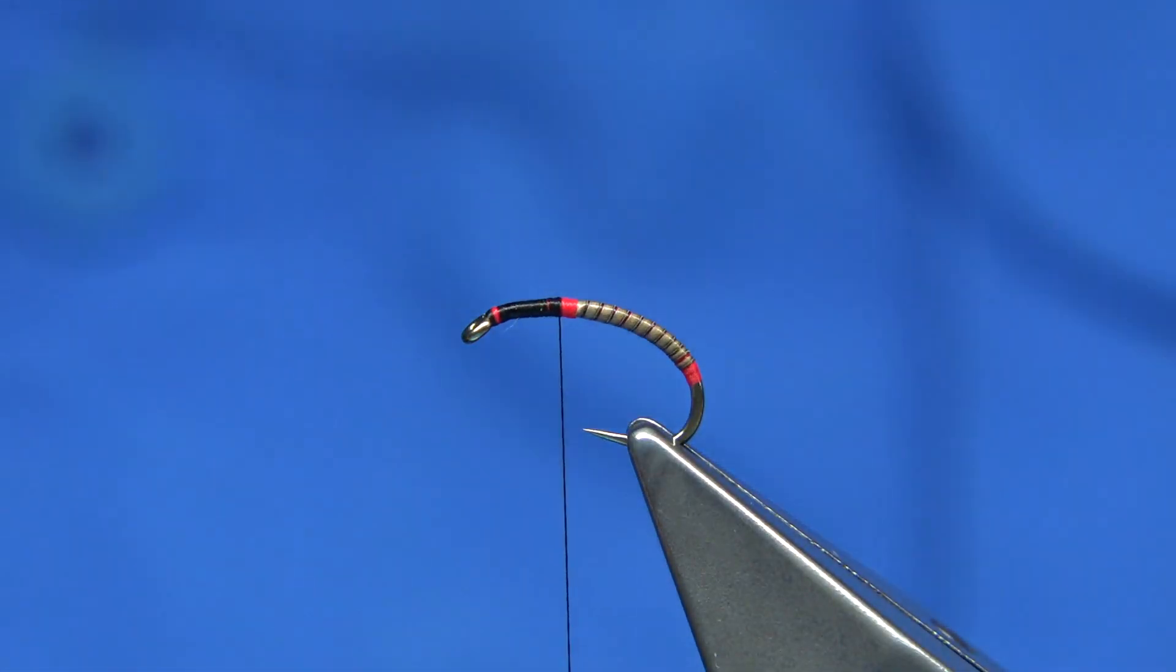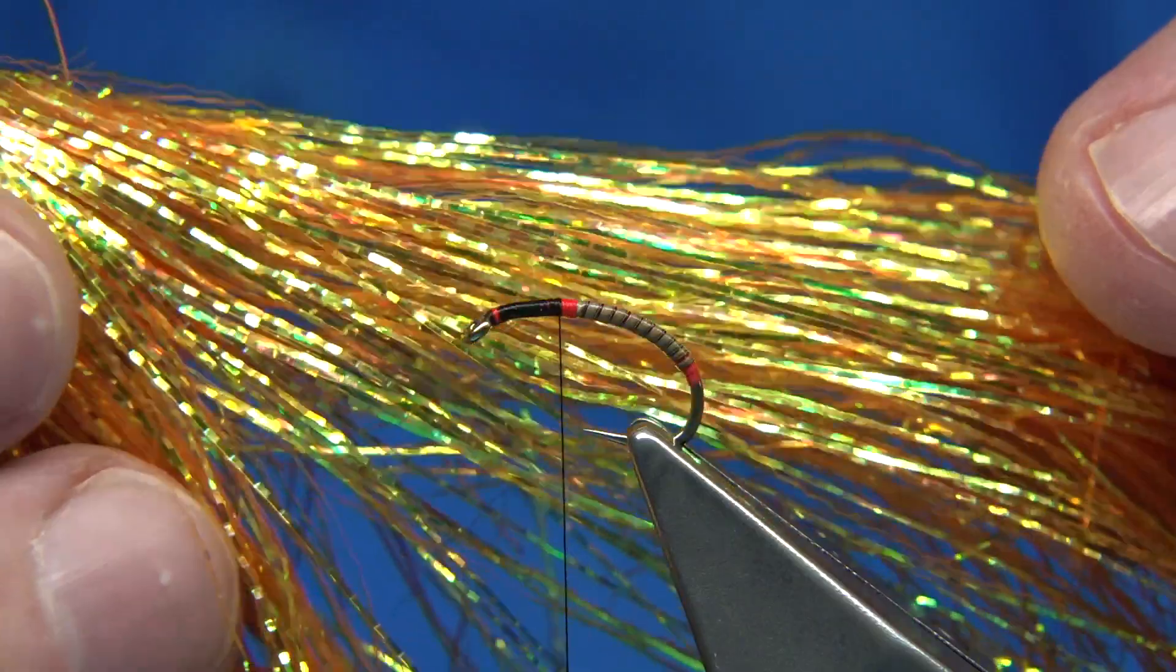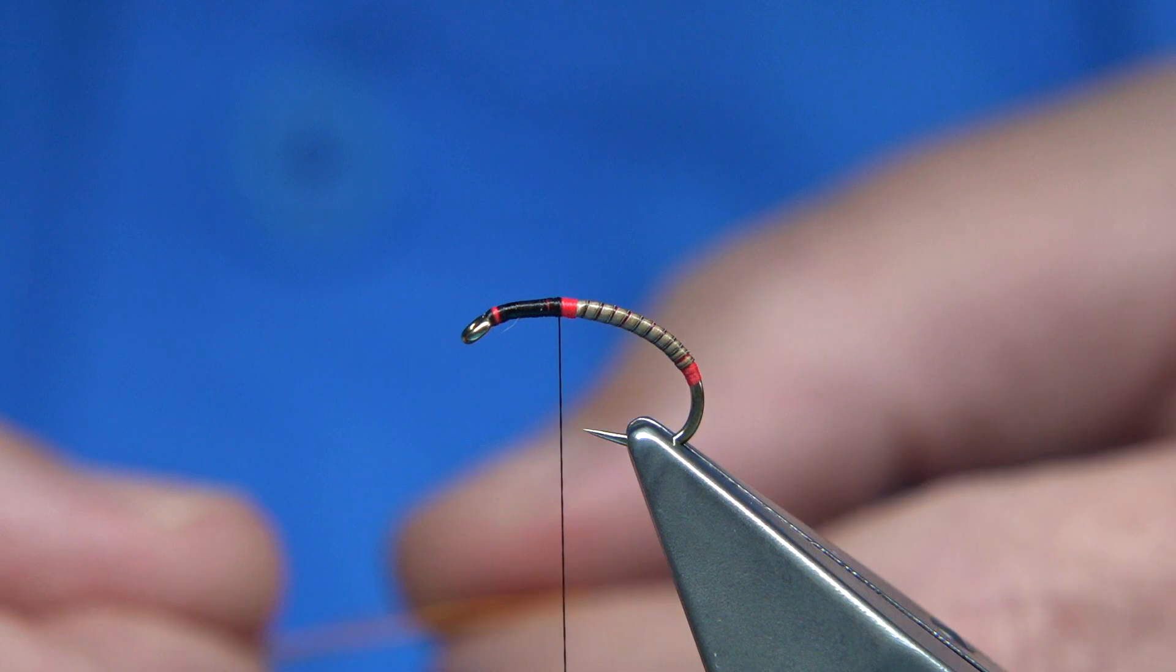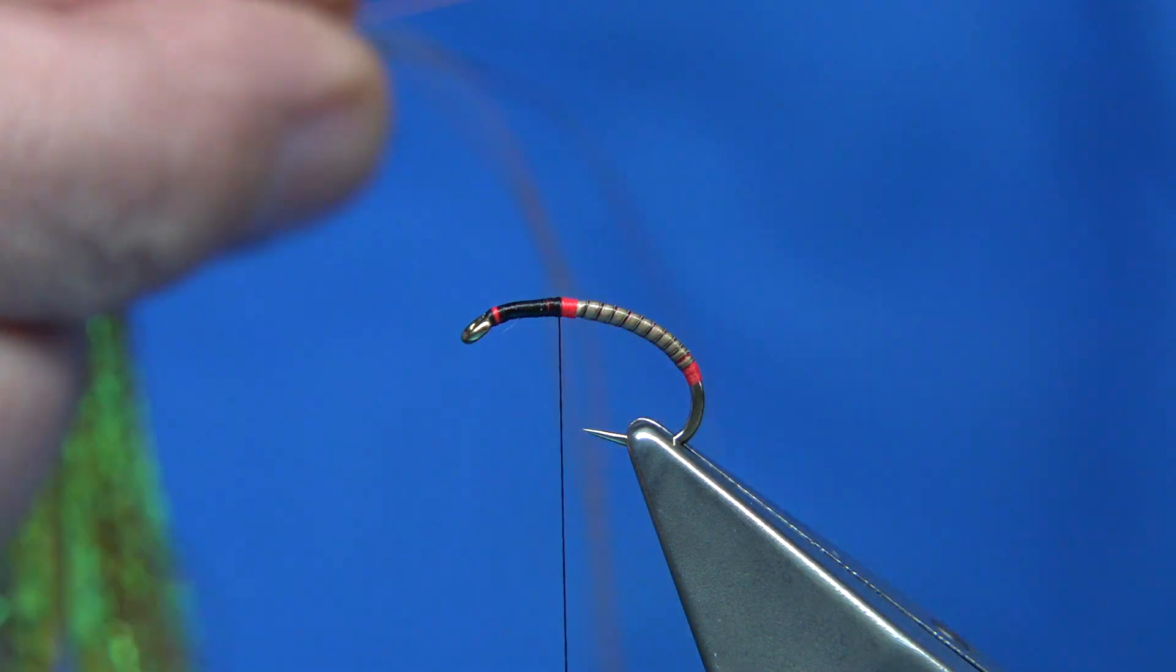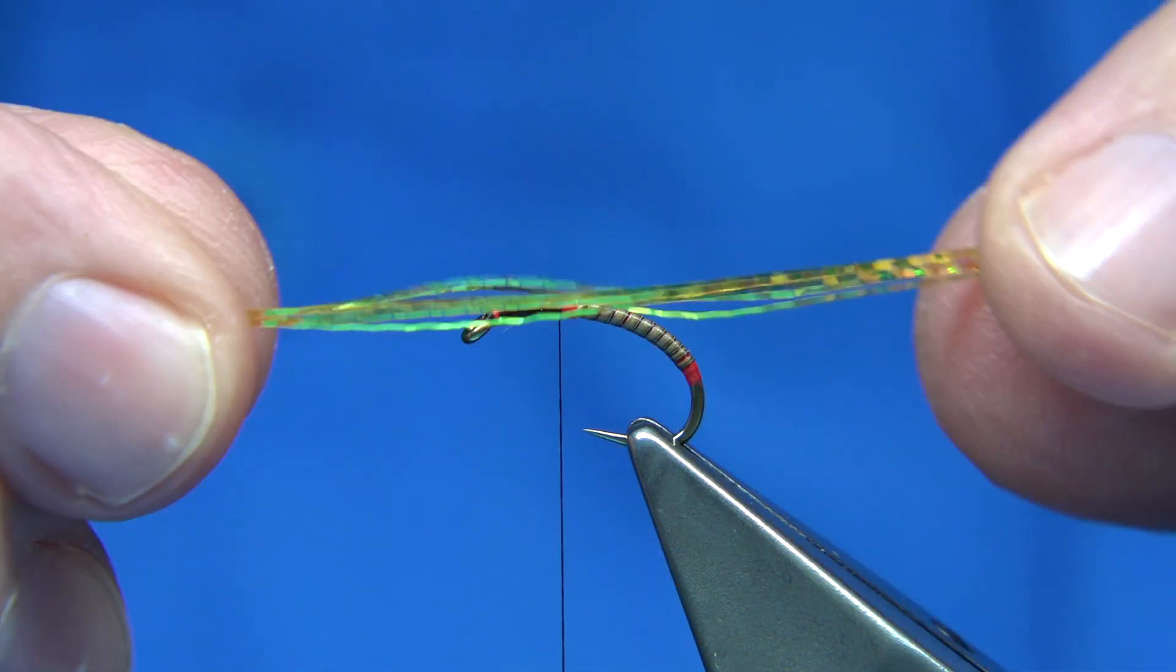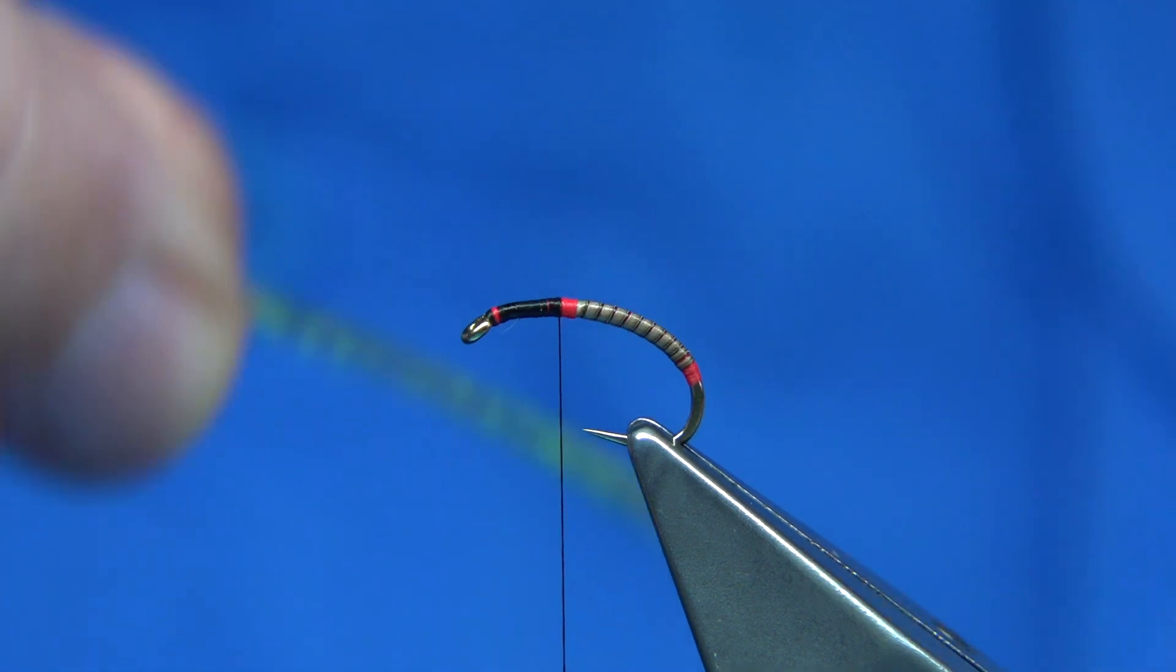And then I've got orange crinkle flash. I'm bringing out about maybe four to five, at least maybe about five strands. I'm going to use this as wing buds. It catches the light really well as you probably realize.